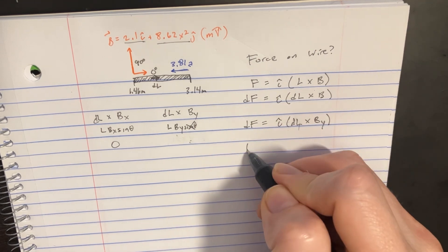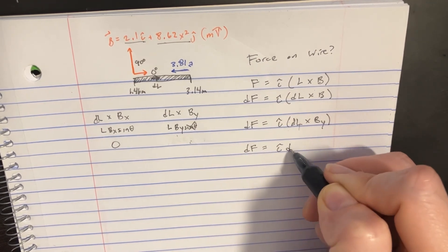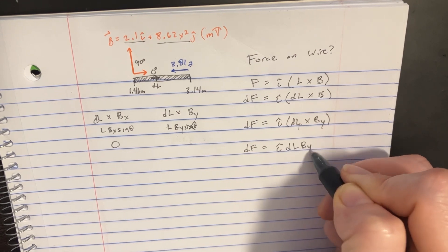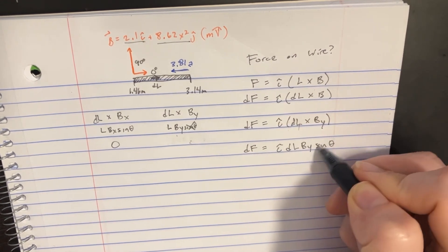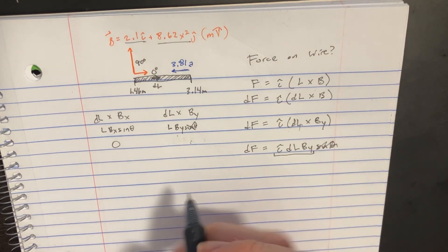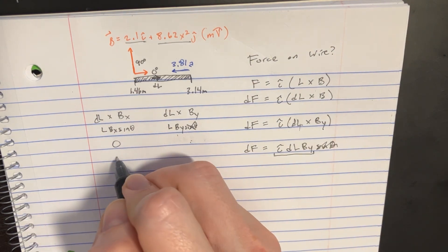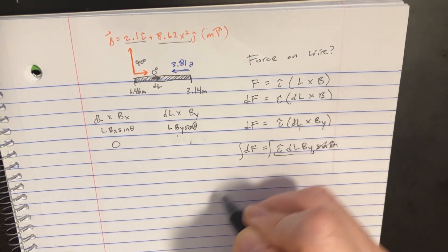So dF equals i·dL·B_y·sin(θ). The sine goes away and we're left with this. We can figure that out - we're going to integrate that.